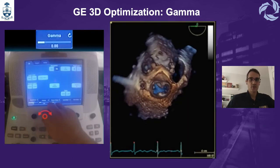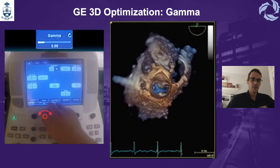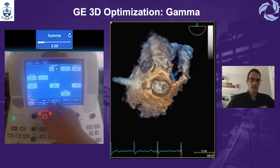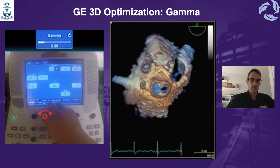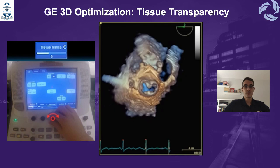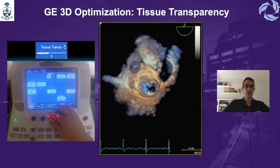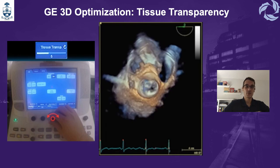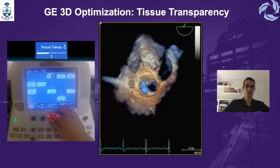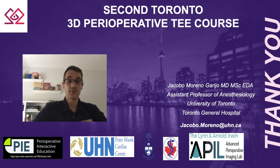You can use gamma, which is the ratio of light and dark shades, and on the left side of the screen is where you can find the knob. Finally, you can use tissue transparency — as you see in this example, you can increase the tissue transparency making it thinner, or you can decrease it. You don't want to decrease it too much, or you will lose the possibility of appreciating the structures. This is the end of the presentation. Thank you very much for listening, and I will be happy to answer your questions.